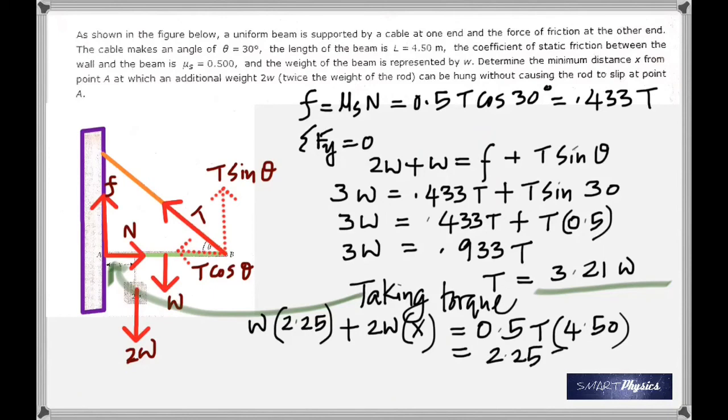So on the right side you have 2.25 T, but T can be substituted as 3.21 W. And multiplying those two numbers gives you 7.23. On the left side, now we can take this to the other side and subtract.